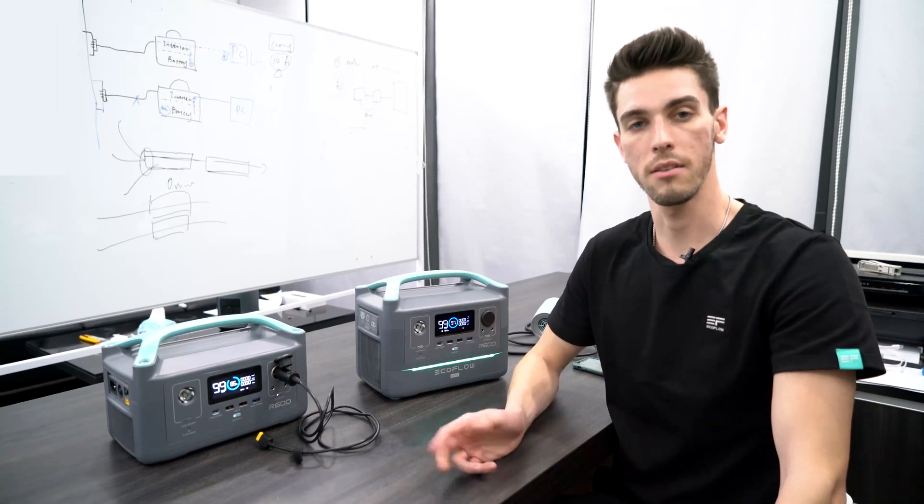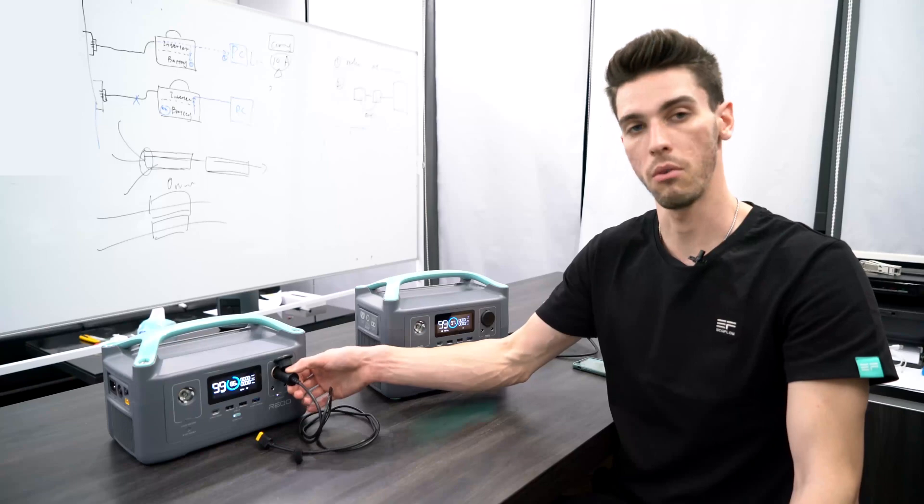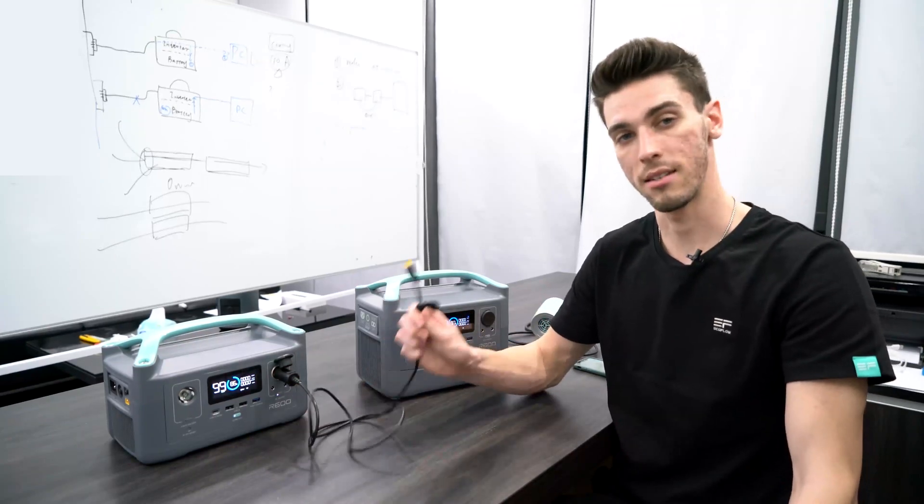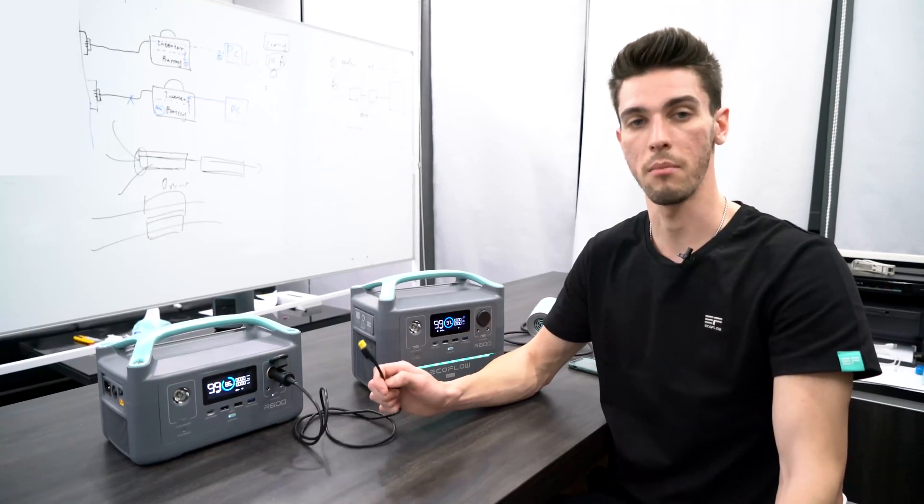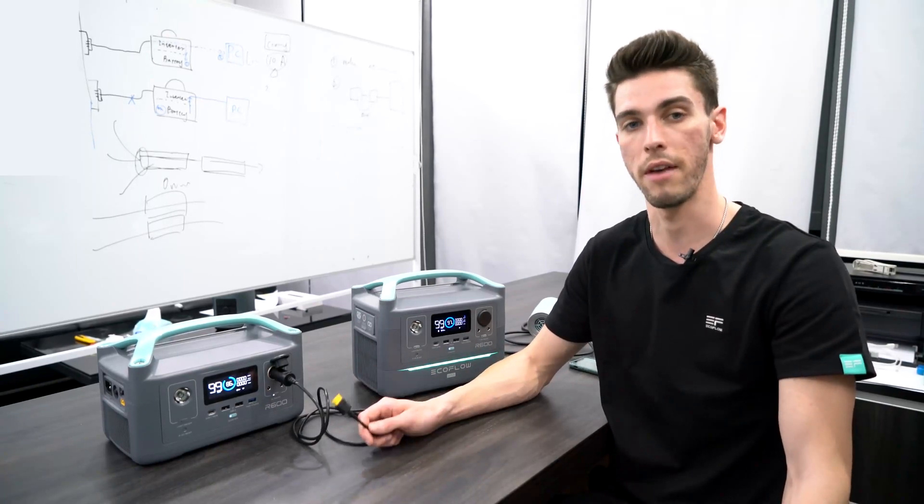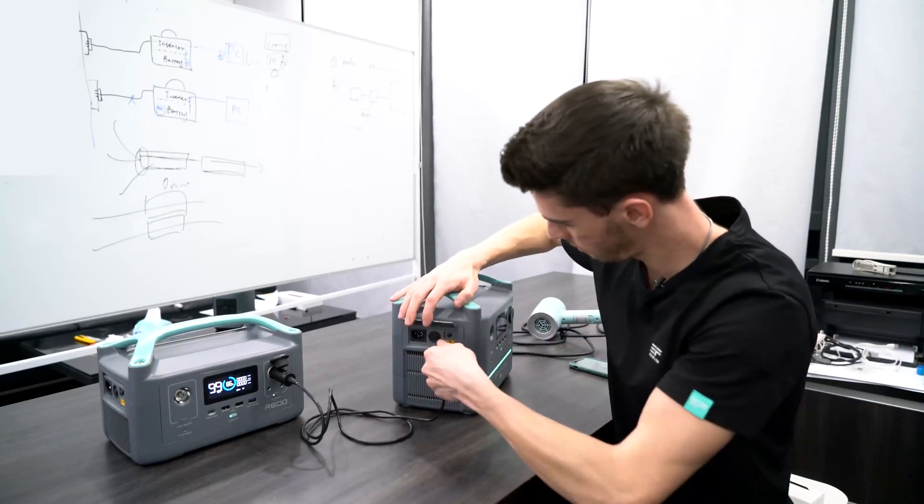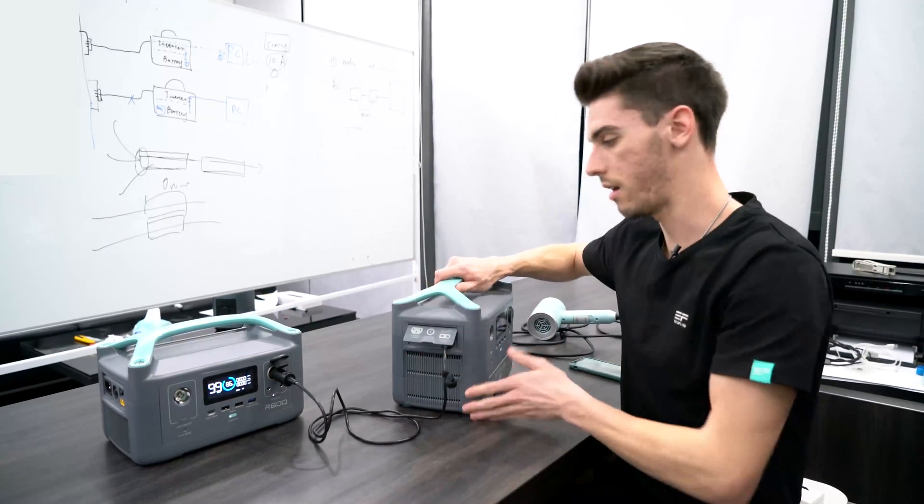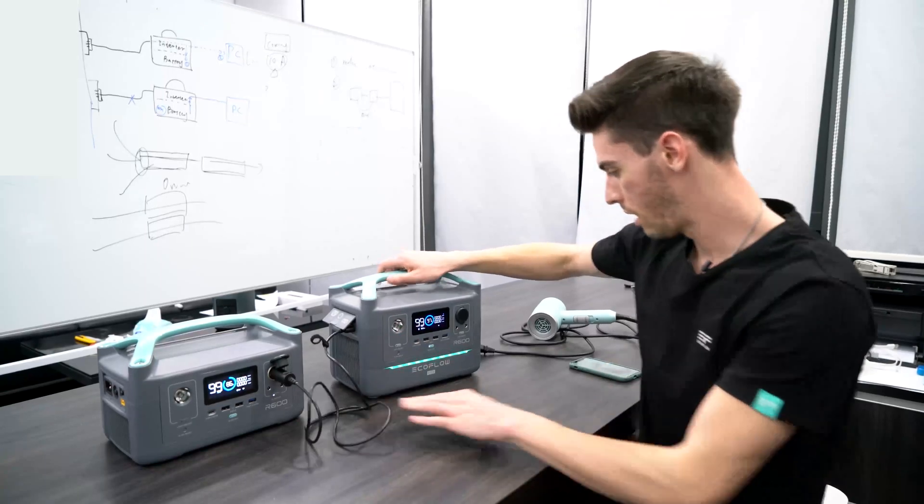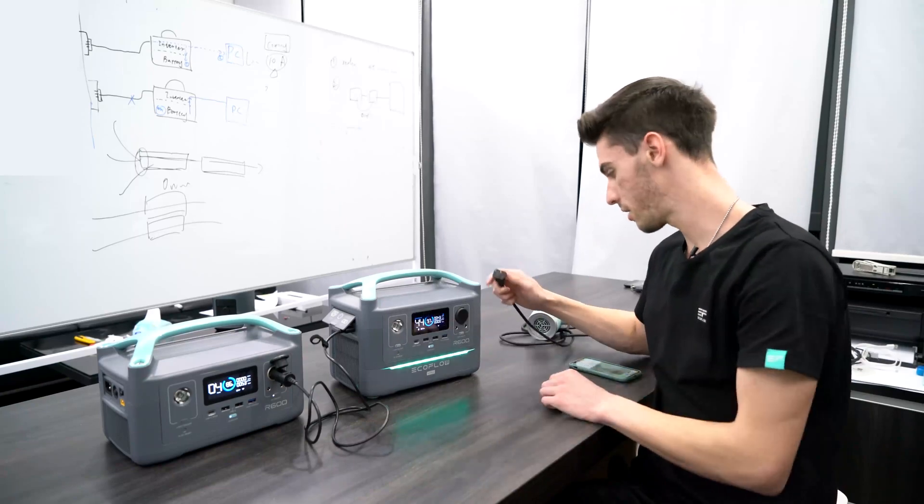Okay, now we're going to test the flow-through charging capabilities by connecting a DC power source from this 12 volt car port to this yellow XT60 port, which can be recharged by any solar setup or DC power source ranging from 10 volt to 25 volt with a 12 amp max. Alright, we're connected. And you can see here it's charging.